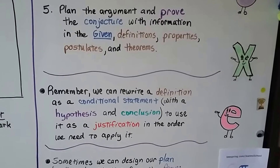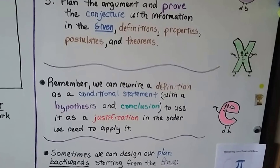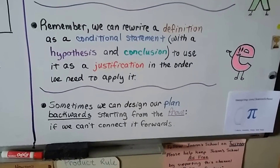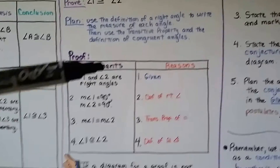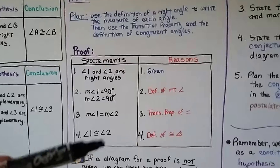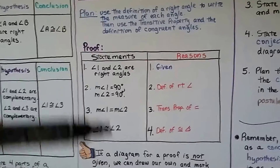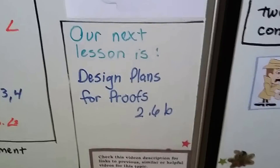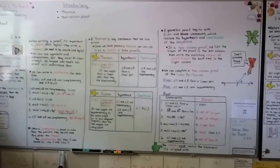Remember, we can write a definition as a conditional statement — with a hypothesis and conclusion — to use it as justification in the order we need to apply it. We learned that in a previous video. And sometimes we can design our plan backwards, starting from the proof, if we can't connect it forwards. If you're having a hard time and you can't figure out logically how to get from step 1 to the last step, try starting at the proof and finding its justification, then working backwards. Sometimes you work forwards, then backwards, until you get the middle parts. Our next lesson is Design Plans for Proofs, Lesson 2.6b, where we'll break down two-column proofs a bit more and talk about plans.